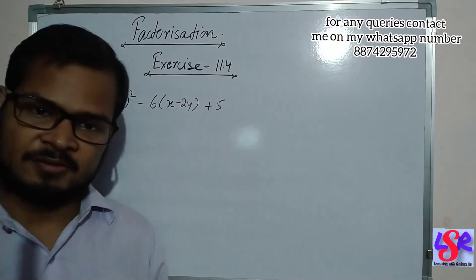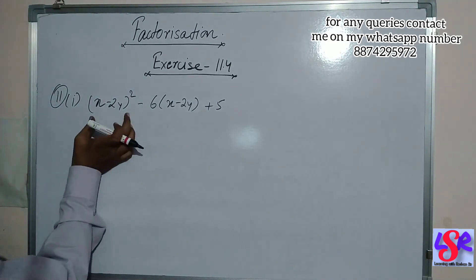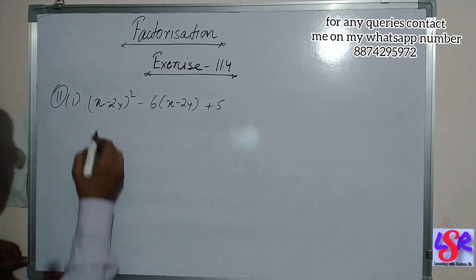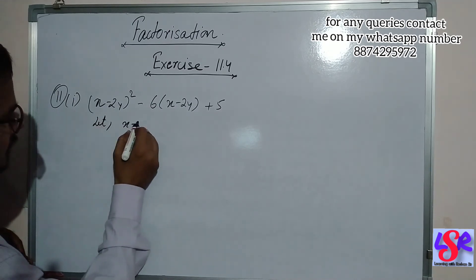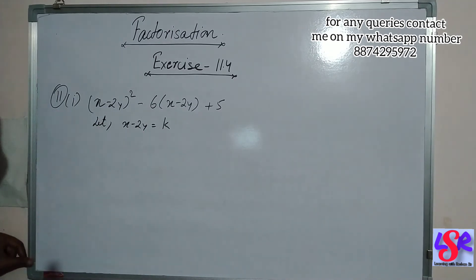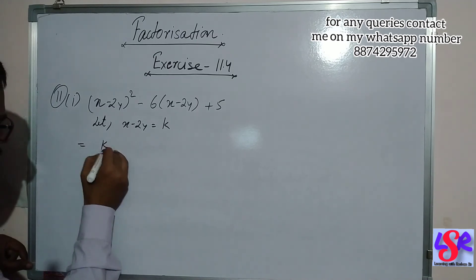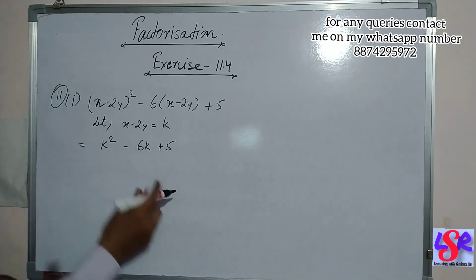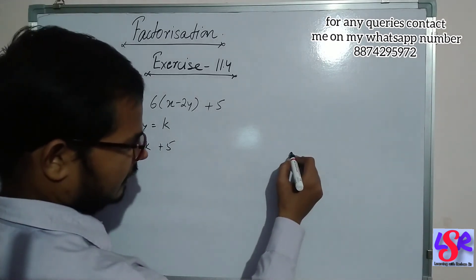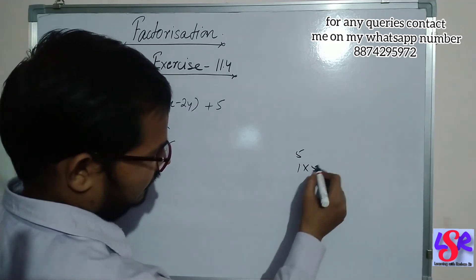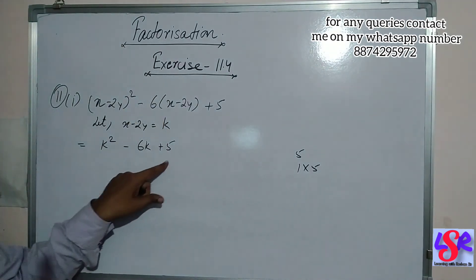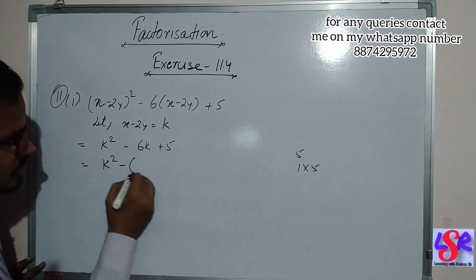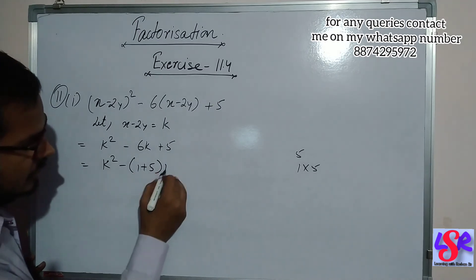Now let us go with question number 11, first part. Here we are having x minus 2y to the whole square minus 6 times x minus 2y plus 5. We let x minus 2y equals k and write this as k square minus 6k plus 5. Multiplying 1 and 5 gives 5, and the factors are 1 and 5. As we have a positive sign, we add these two to get 6.